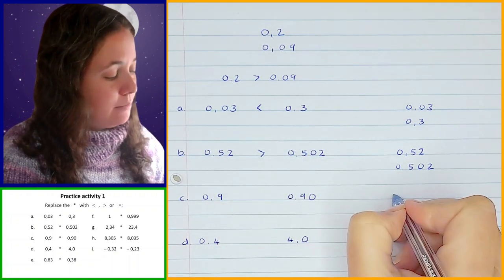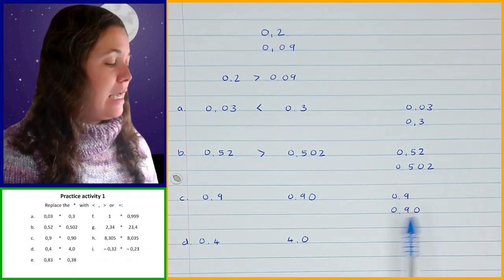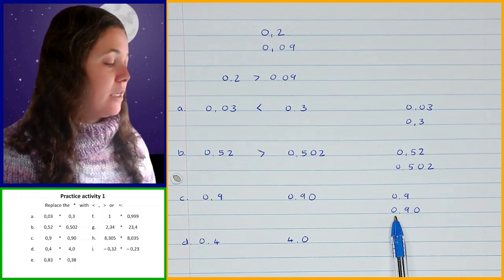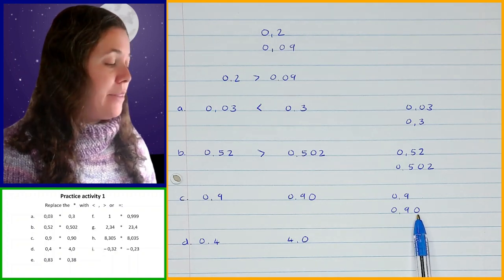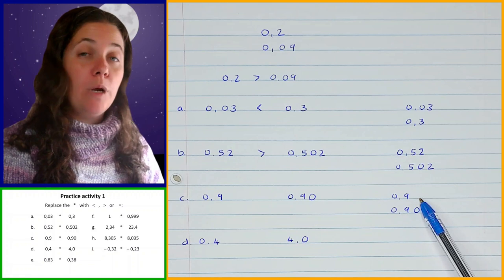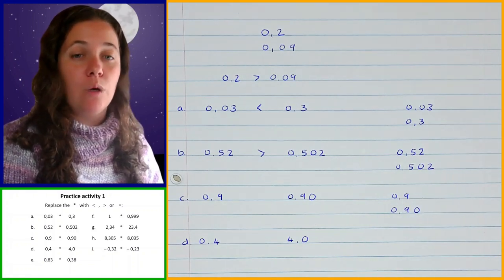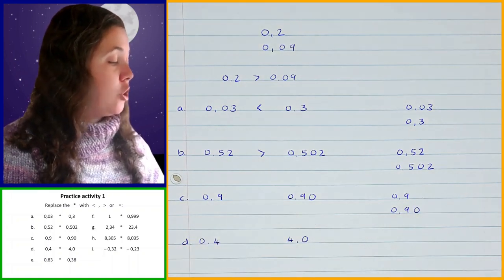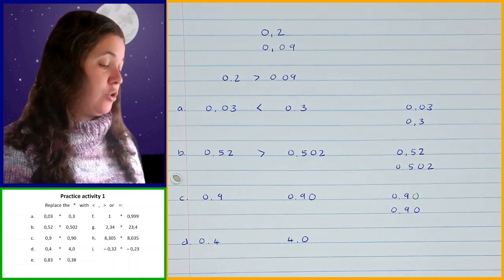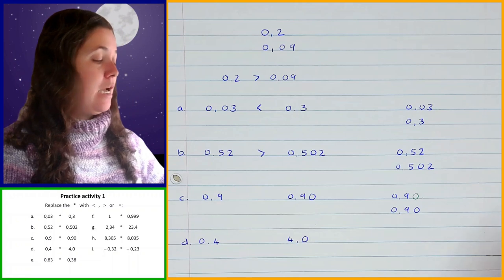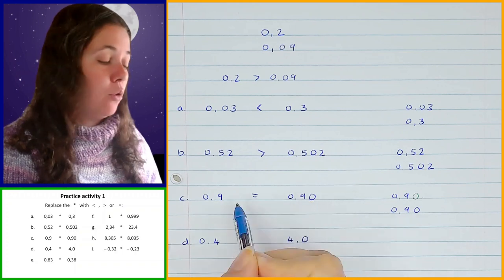Next I've got 0.9 and 0.90. When I compare them, the zeros are the same, then the nines are the same, and then I've got a zero on one side. Remember that when you're writing a decimal fraction, after the decimal point you can continue writing zeros if you want to or if you need to — it doesn't change the value. So these are actually identical to each other, and I can say they are equal, even though one has an extra zero written there.